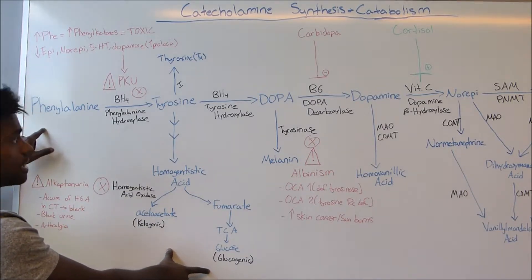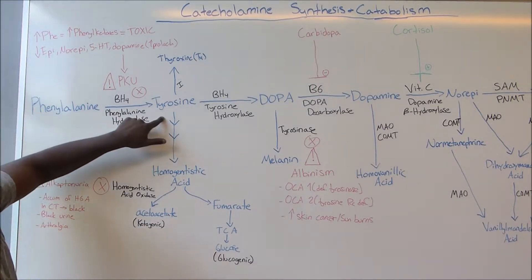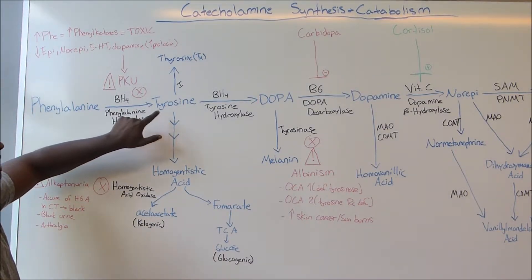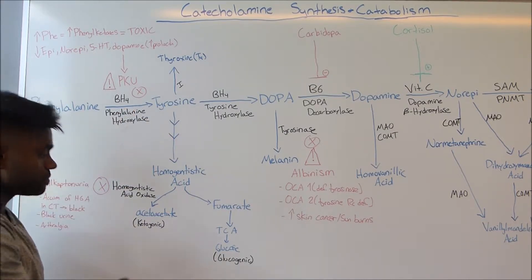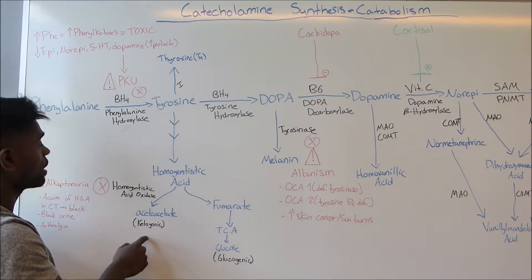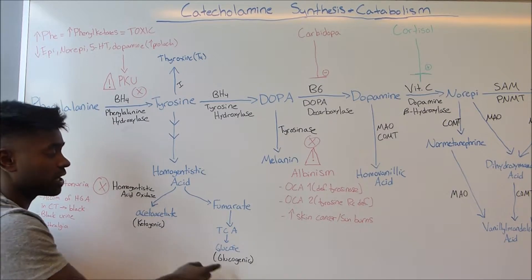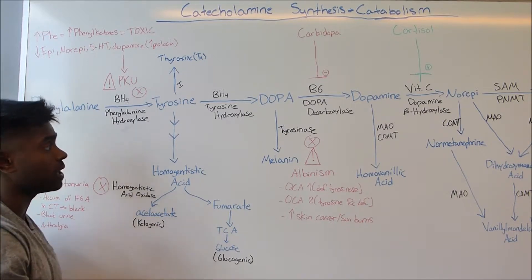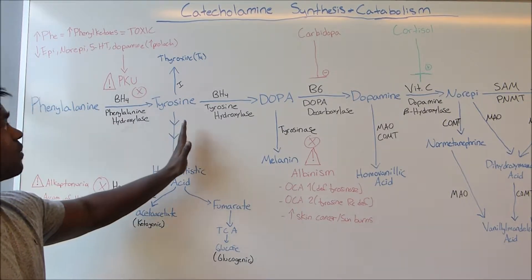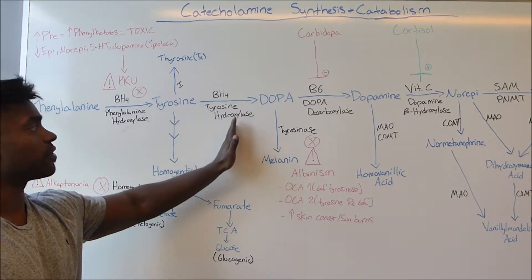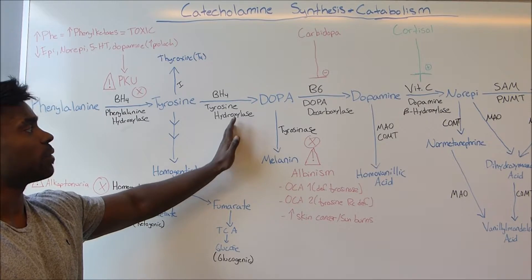And since phenylalanine formed this tyrosine as well, phenylalanine will also be both ketogenic and glucogenic. Now if we go further on into the pathway,